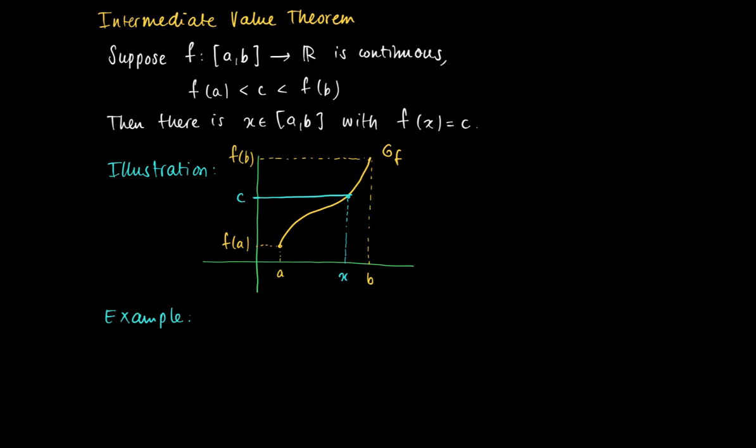So basically the Intermediate Value Theorem states that there's no holes in the graph of the function. So there should be a value in between.